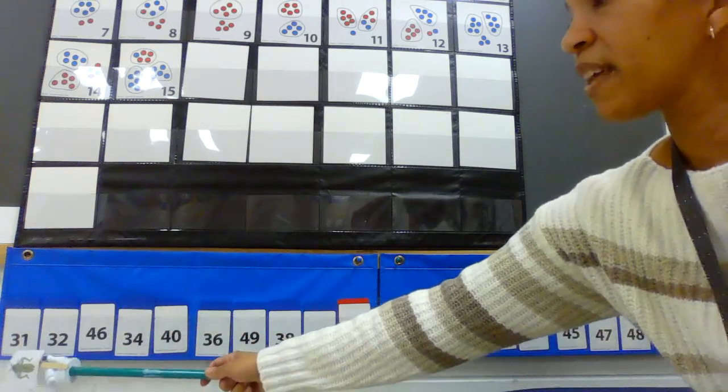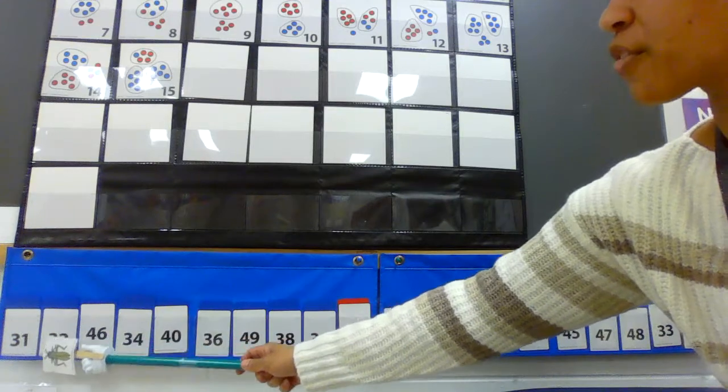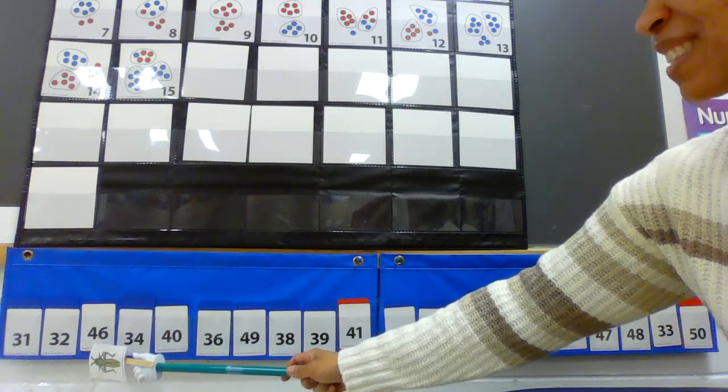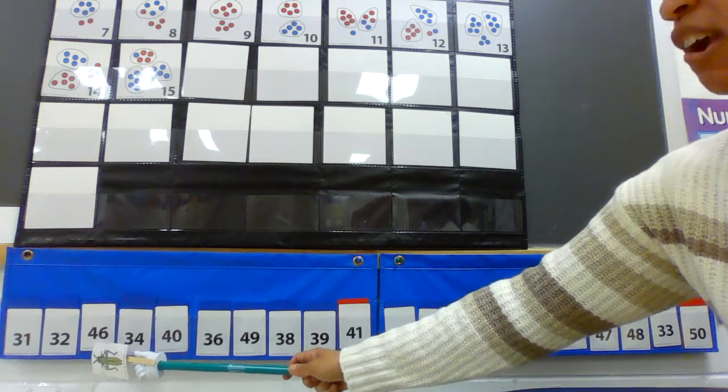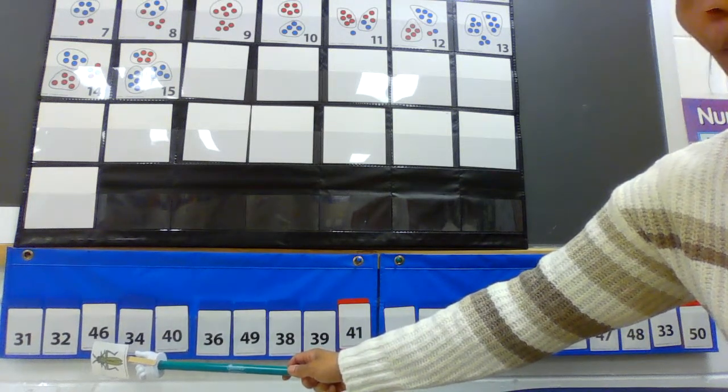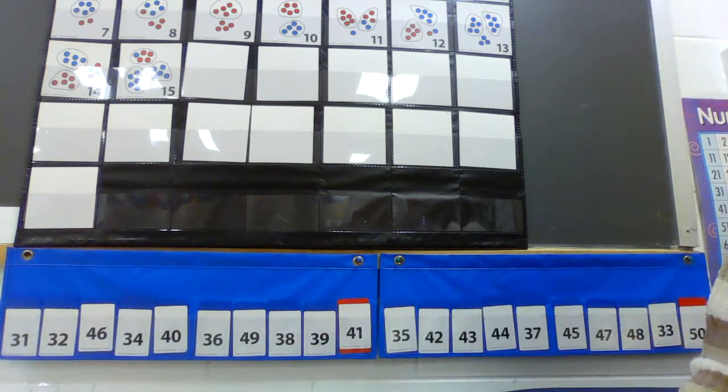So let's go to the first one. What is that first number? 31. So 31, 32, 46. That's not right. What should be there instead of 46? What comes after 32? Hopefully you said 33. So let's find 33.